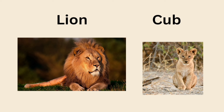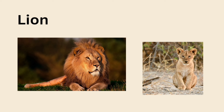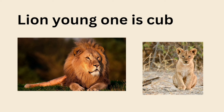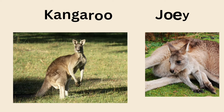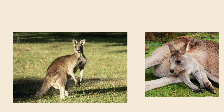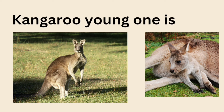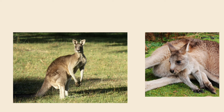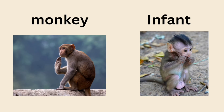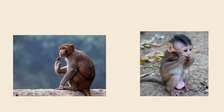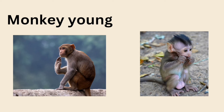Lion — young one is cub. Kangaroo — young one is joey. Monkey — young one is infant.